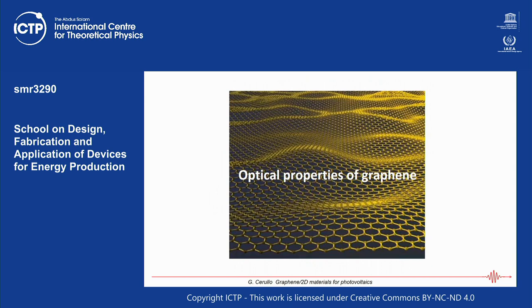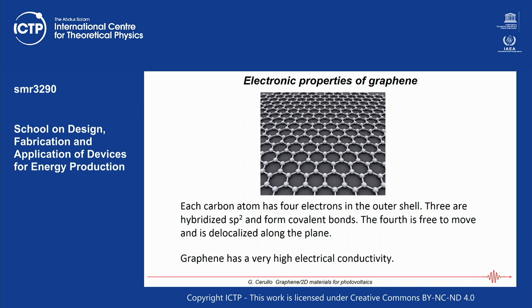Now let's discuss the optical properties of graphene. To understand them, we first need to understand the electronic structure. Each carbon atom has four electrons in its outer shell. Three are hybridized sp2, forming very strong covalent bonds, but the fourth electron is free to move and delocalized along the plane — making graphene a very good electrical conductor.